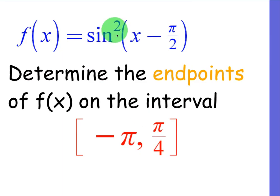For our example, we're going to do sine squared of x minus pi over 2. That's going to be our function. And for our endpoints, we want to figure out where they are on the interval negative pi to pi over 4. So we have just two x values, one on the left, one on the right, and it is a closed interval. We're just going to figure out what those corresponding y values are.